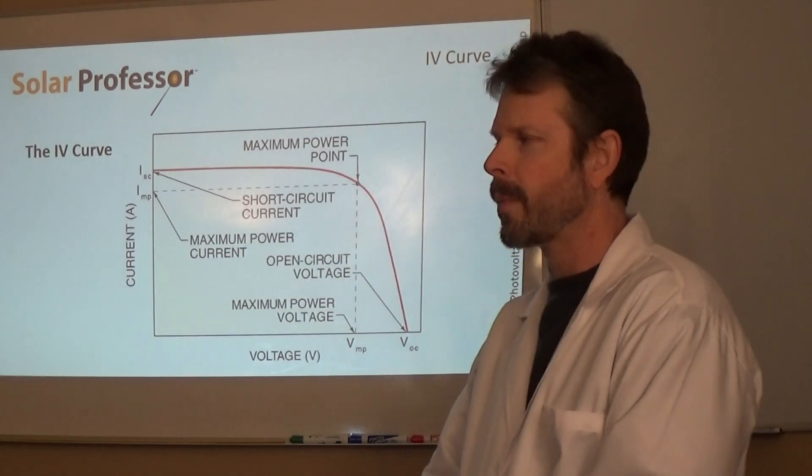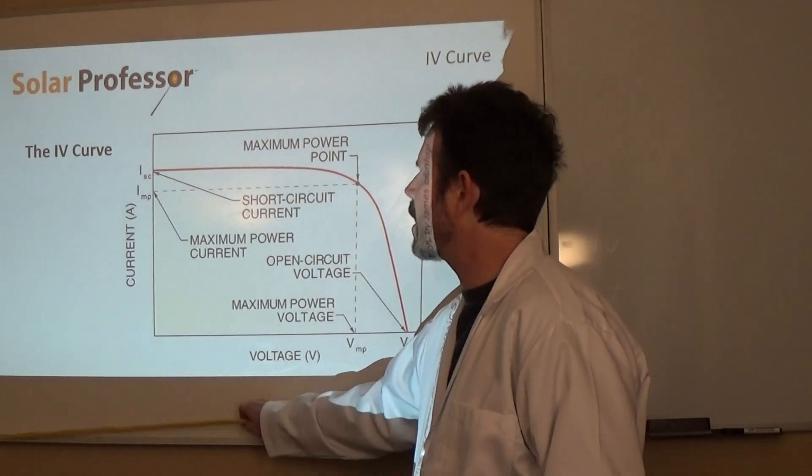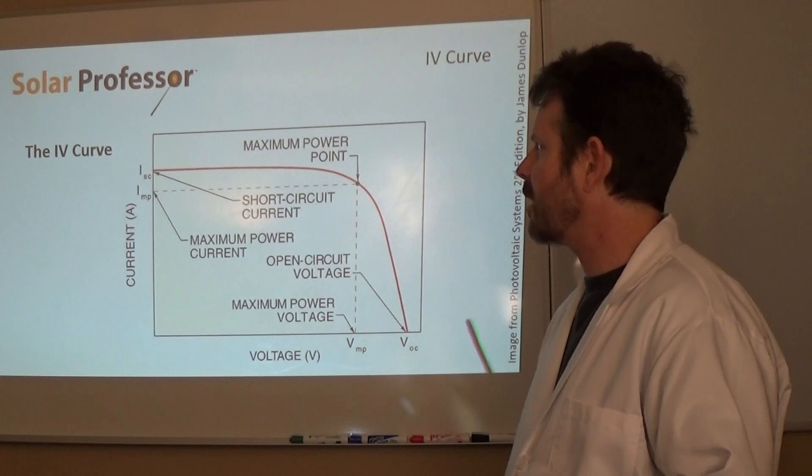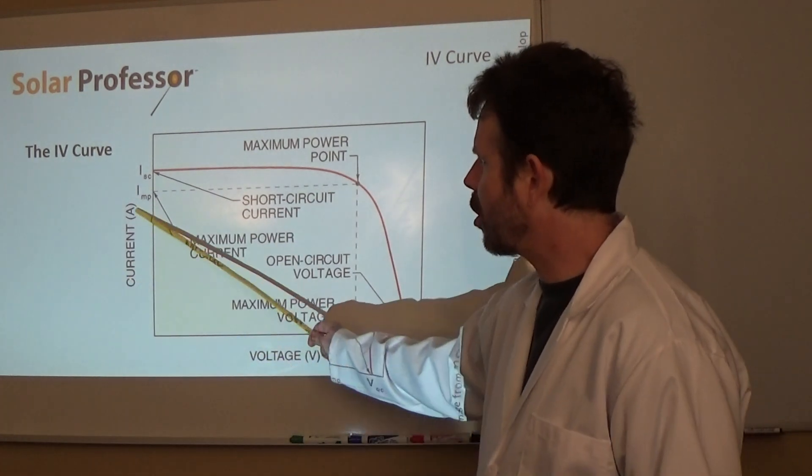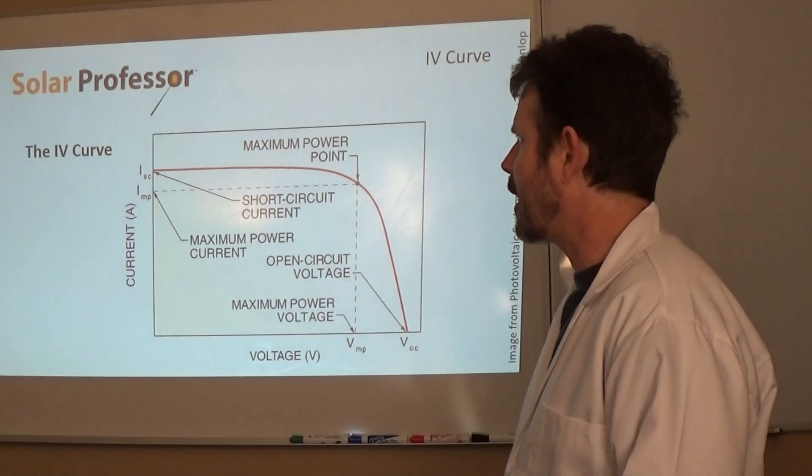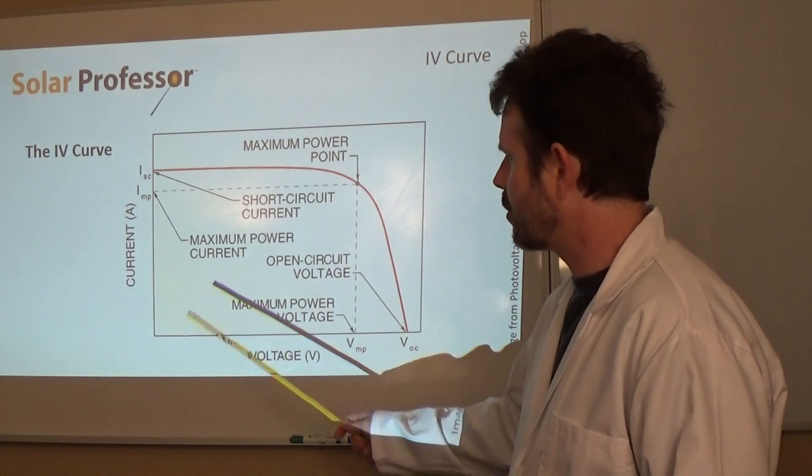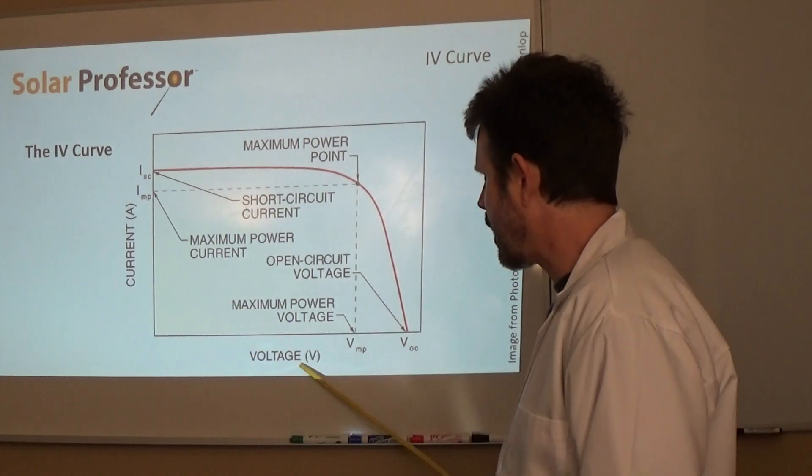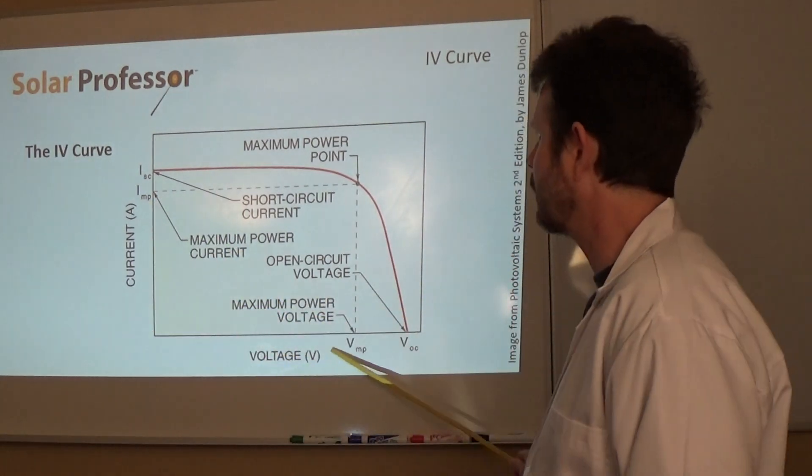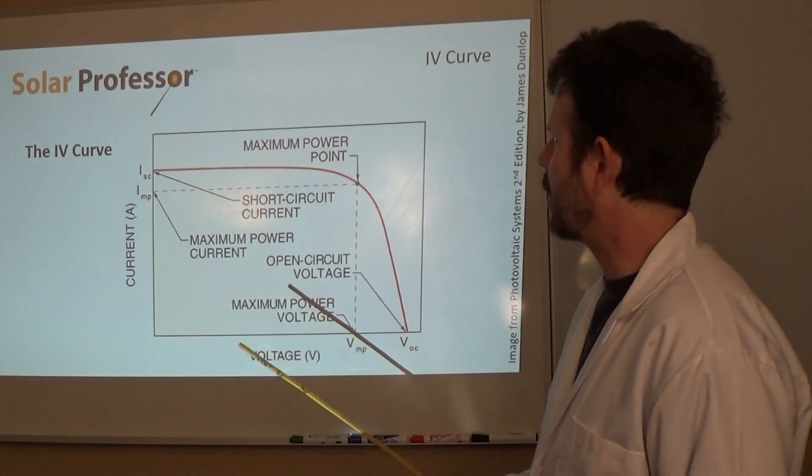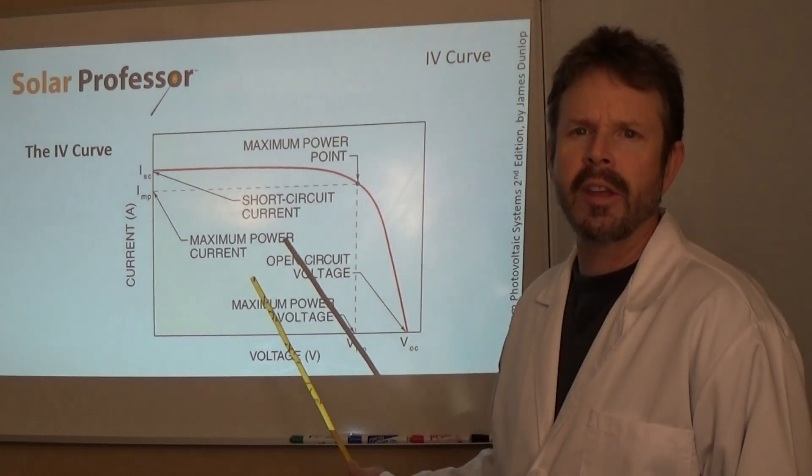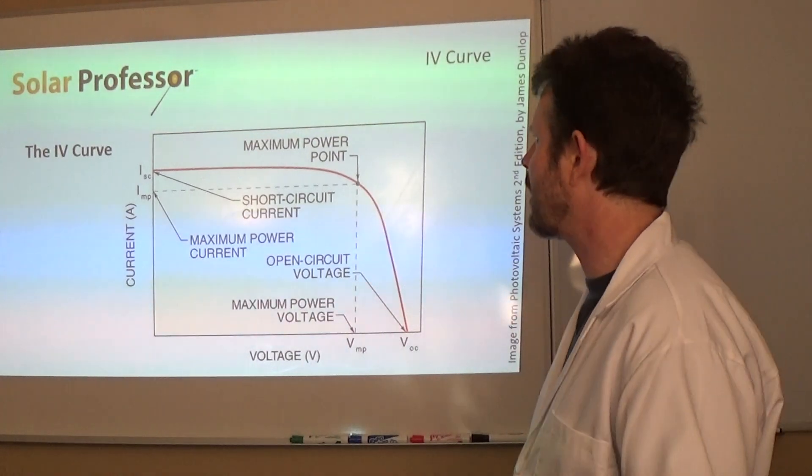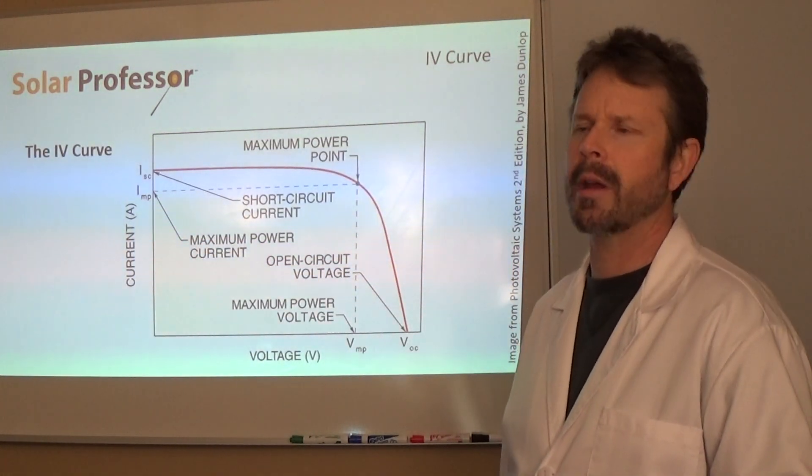Basically what we've got here is the IV curve. IV stands for I for current—I is intensity or current—and then of course V is voltage. So current on this side and then voltage side here at the bottom. A couple of things to note on the IV curve, especially if you're going to be taking the NABCEP exam. You really want to have an understanding of what this is showing us here.